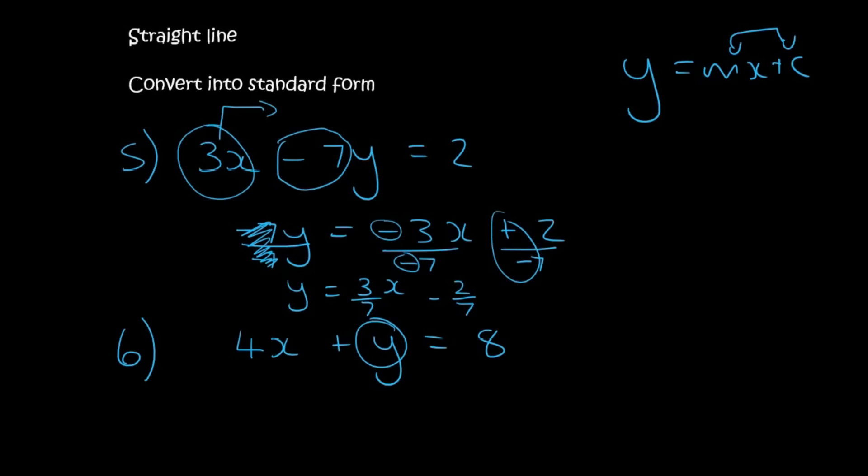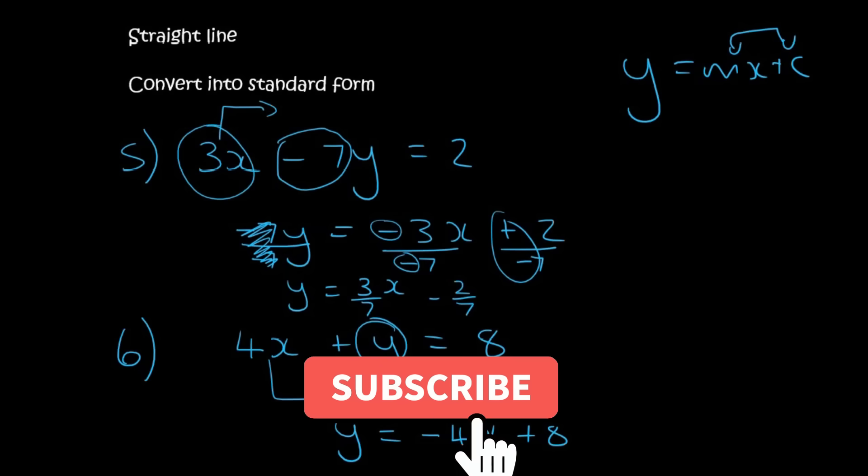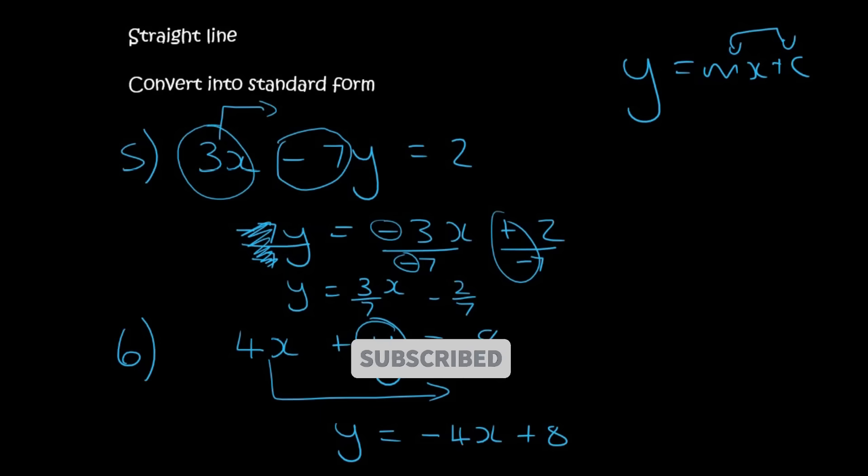For the next one, here's the y. So we need to just move the 4x over. So y will be equal to minus 4x, plus 8. And so standard form is all about getting the y by itself. As we carry on with this chapter, you'll start to see why we do that.